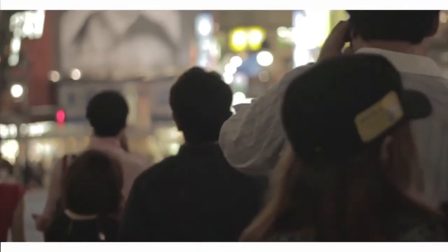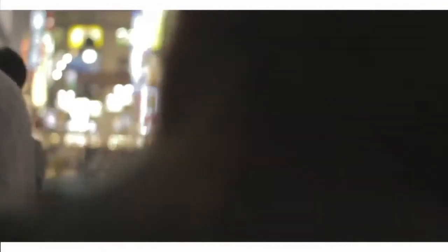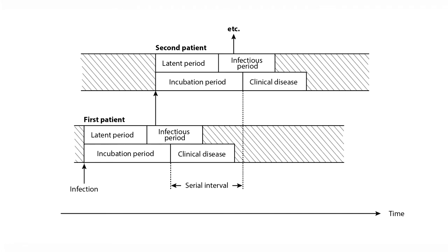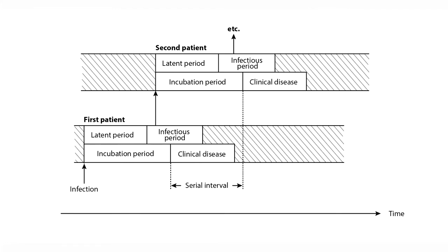When something infects an individual, there are a number of outcomes. An individual becomes affected, and then there's an incubation period, which leads to clinical disease or no disease. When somebody is incubating that infection — not yet sick, but with it growing in their body — there is a latent period, a period when they're not infectious at all. They can become infectious even before they get clinically ill, and it is during that infectious period that they can infect another person.